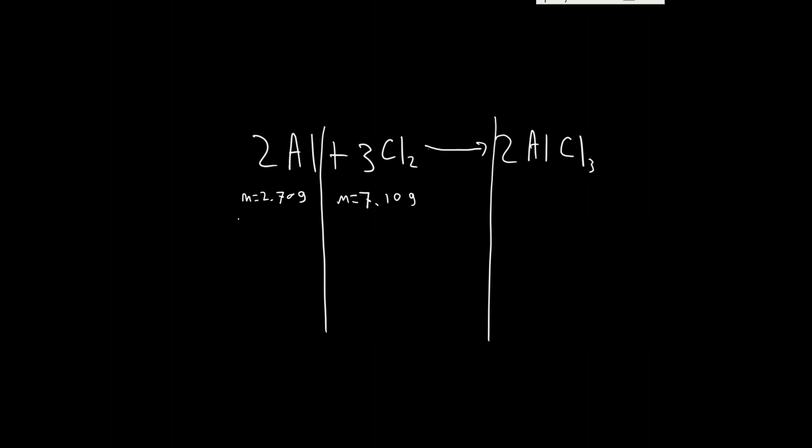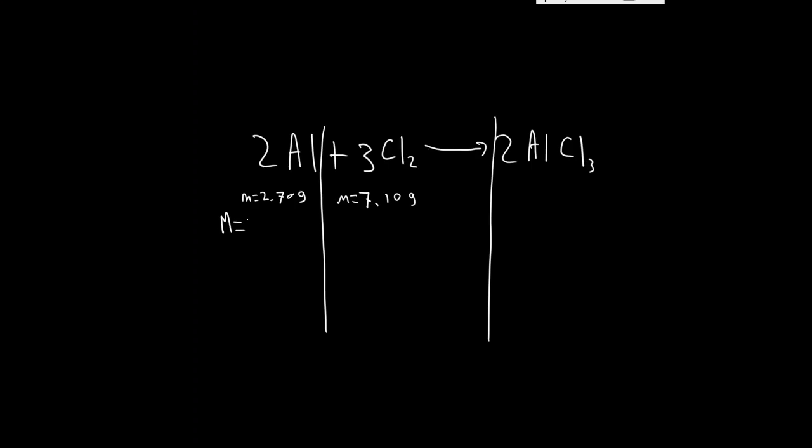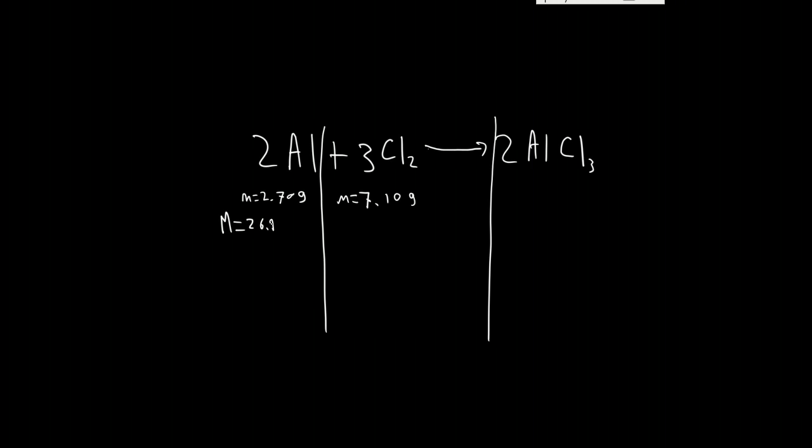So this molar mass, we'll go to our table of periodic elements. We see aluminum is 26.982 grams per mole. And so therefore, number of moles, we'll get approximately 0.1 moles, 0.100 mole, or 100 millimoles depending on how you go.